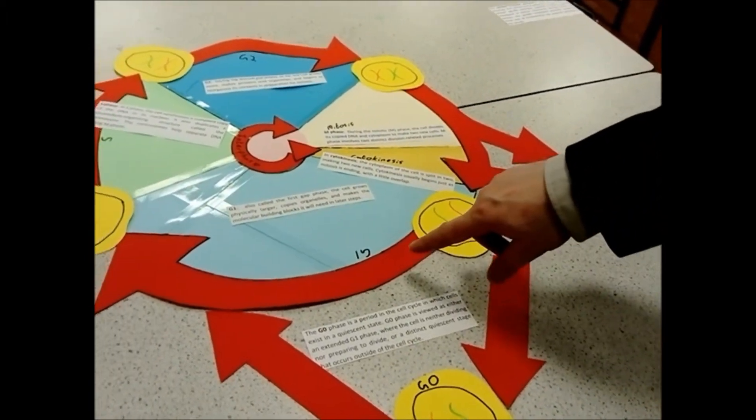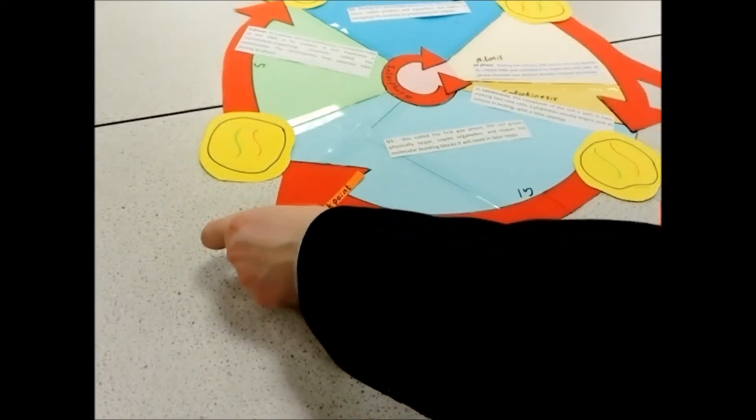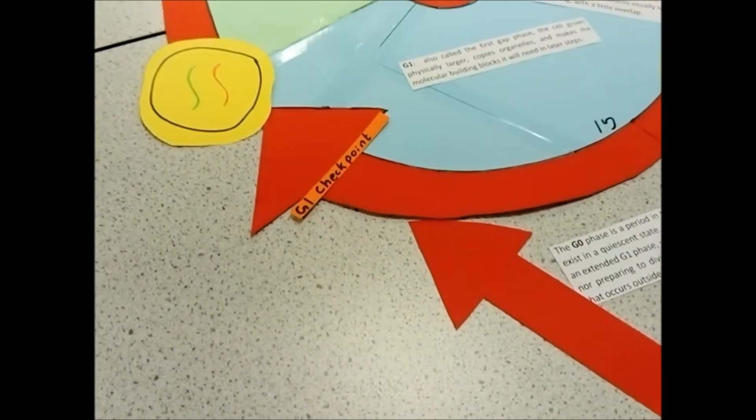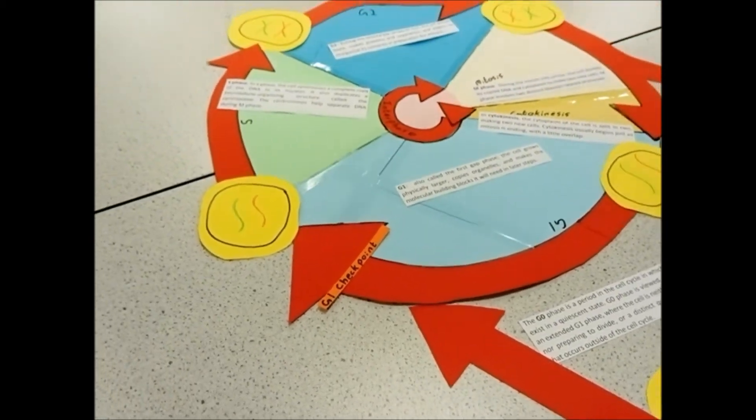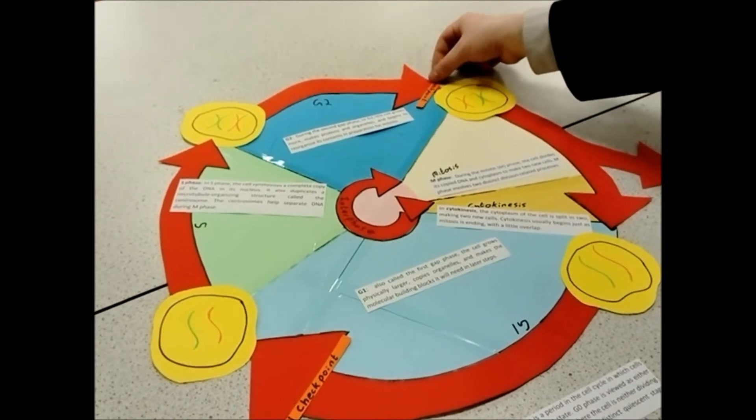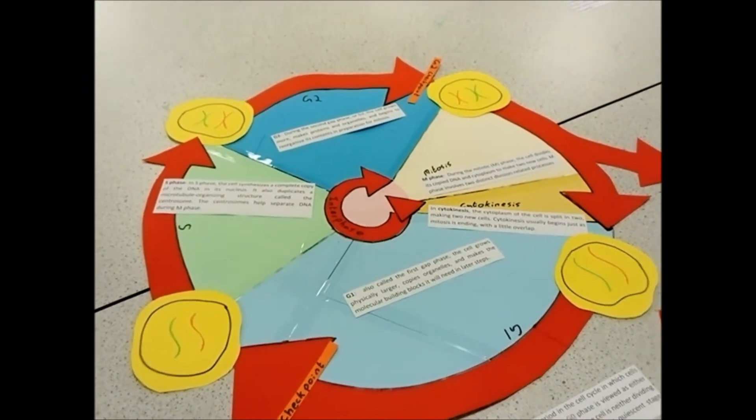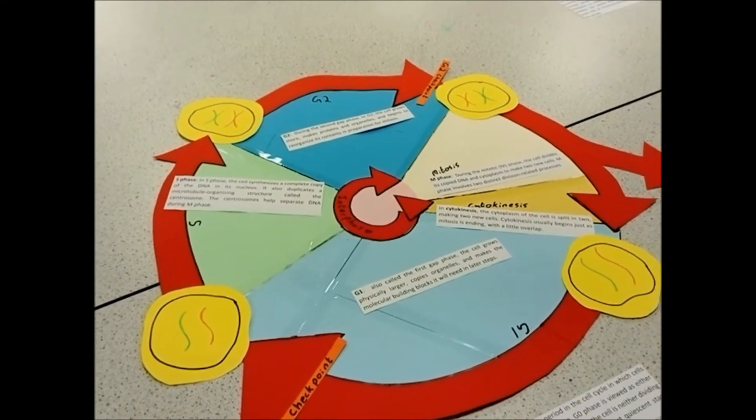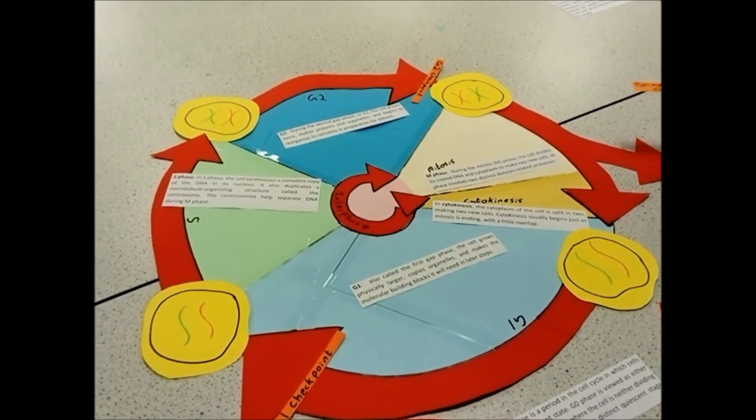At the end of the G1 phase, there is a G1 checkpoint. At the end of the G2 phase, there is a G2 checkpoint, and in mitosis, there's a spindle assembly checkpoint.